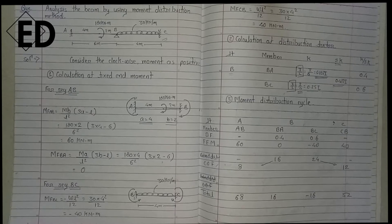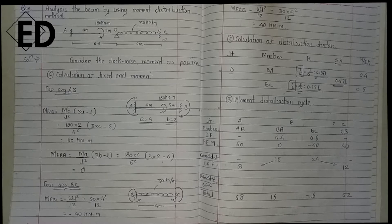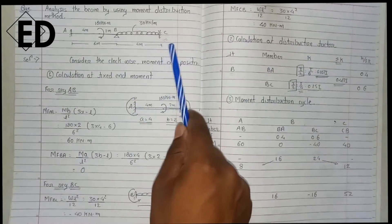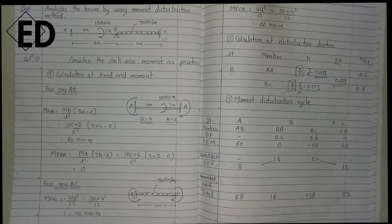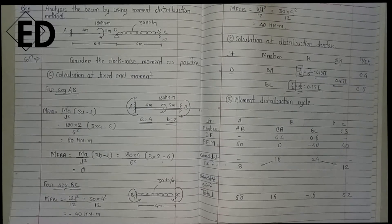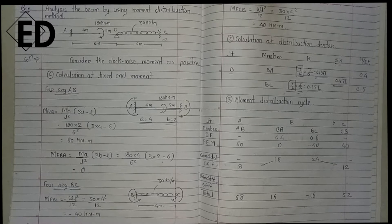Hello friends. In this video we are going to see how the moment distribution method was used for the analysis of a continuous beam. This is a very simple type of continuous beam which is given here, in which we use the moment distribution method. Let's see how to calculate it.